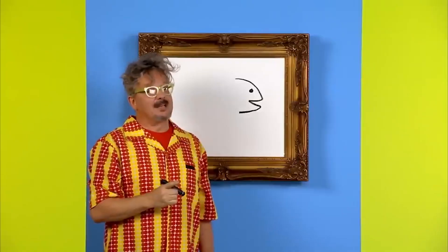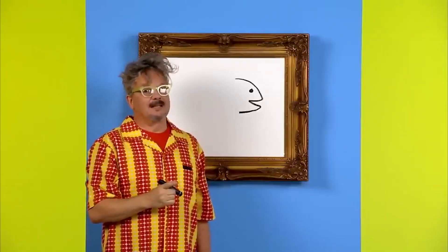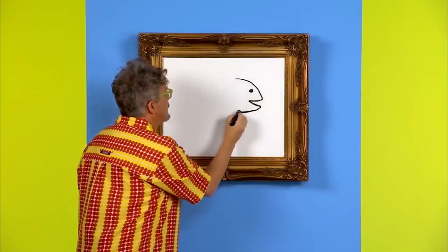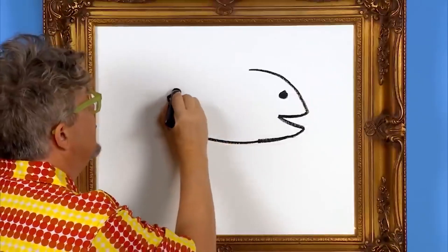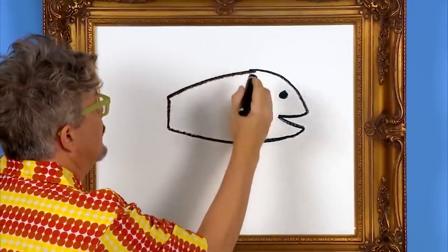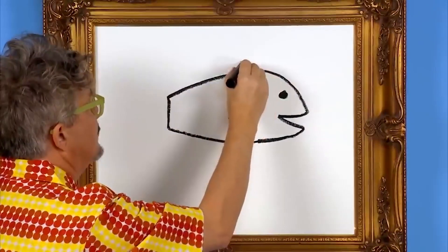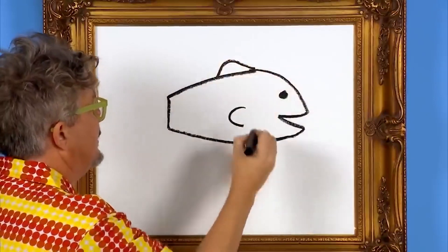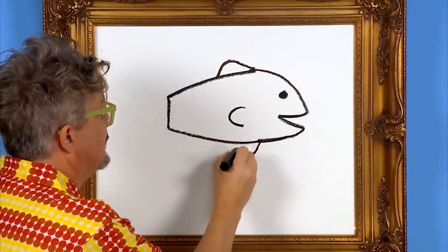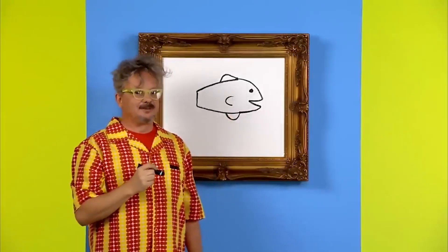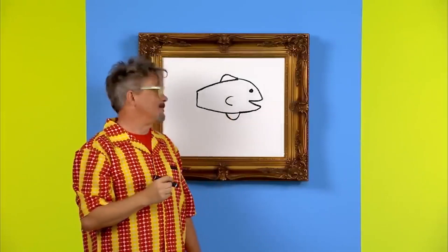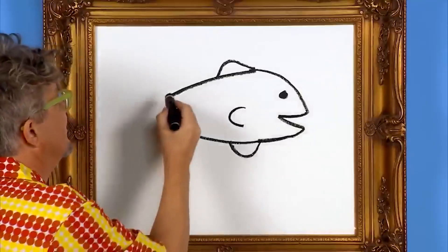Now let's draw the shape of the fish's body. Uh oh, something else is missing from our fish. That's right, we need to draw a tail on our fish.